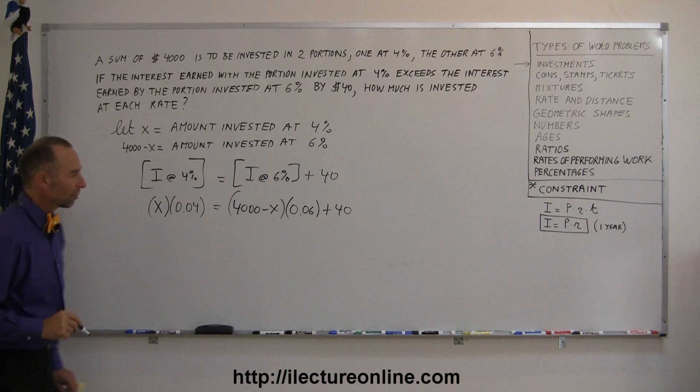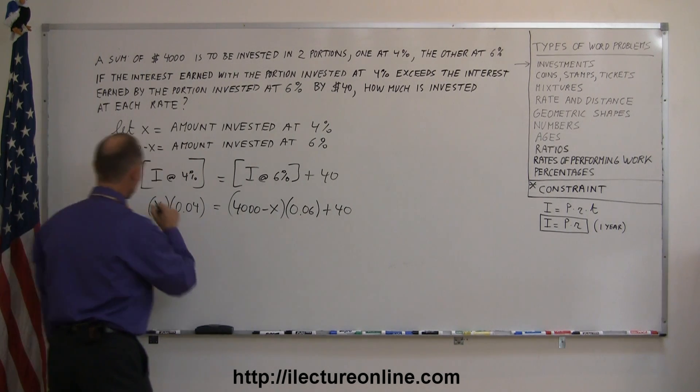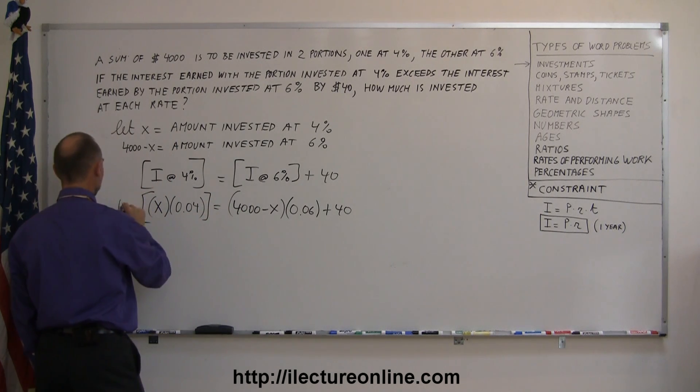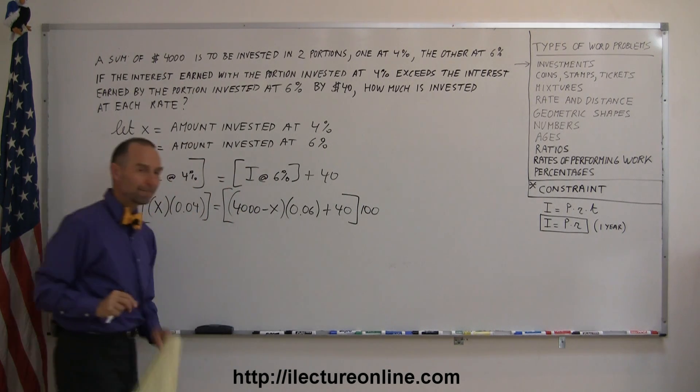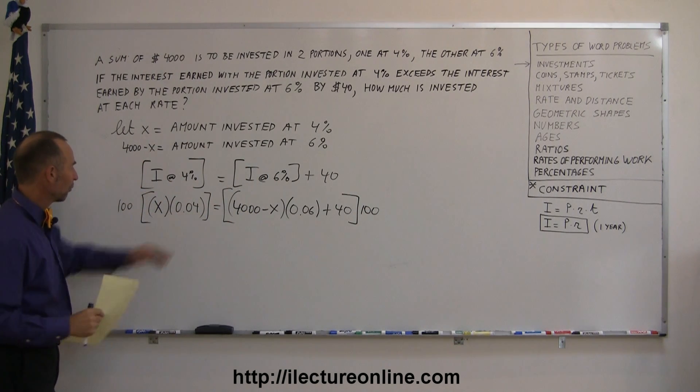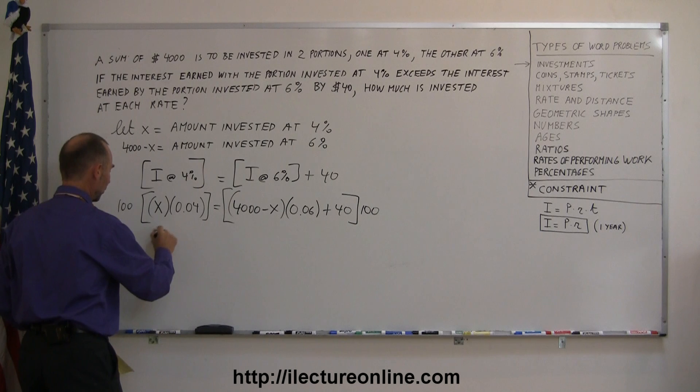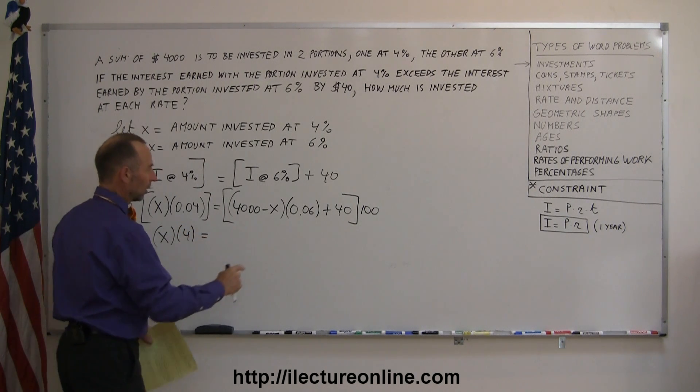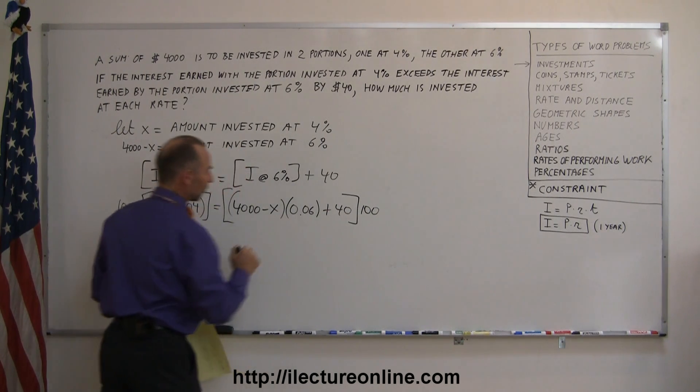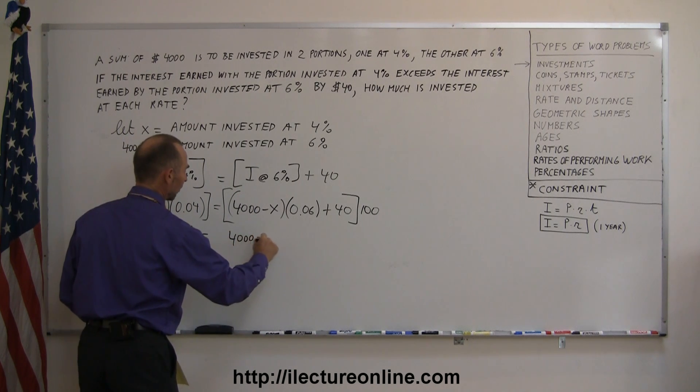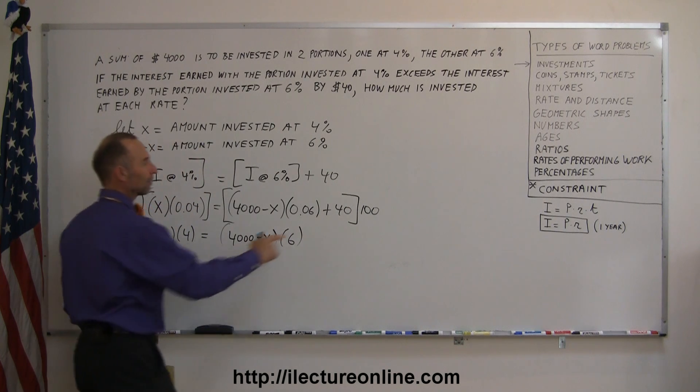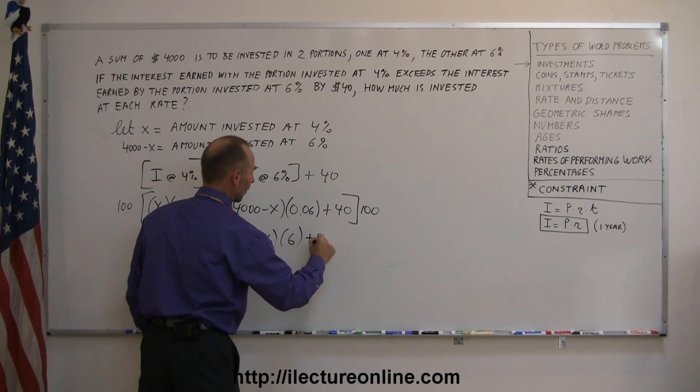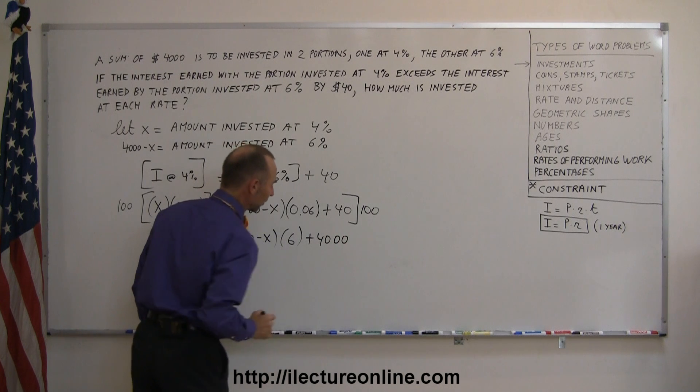Now I'm ready to solve this equation. The first thing I would like to do is get rid of the decimals, so multiply both sides by 100. So the left side by 100, multiply the right side by 100. So 100 times 0.04 is 4, so this is X times 4, equals 100 times 0.06 is 6, so this becomes 4,000 minus X times 6, and 100 times 40 is 4 with 2 more zeros, so that becomes now 4,000.